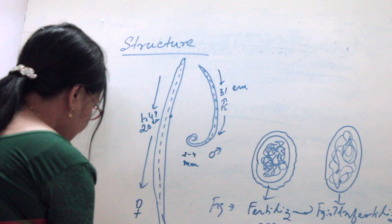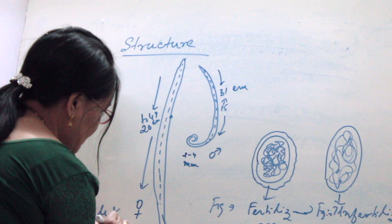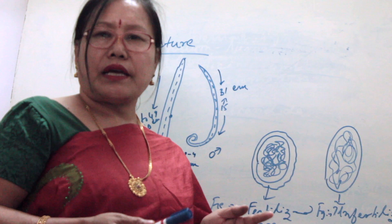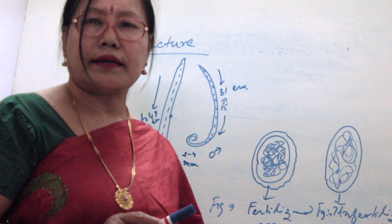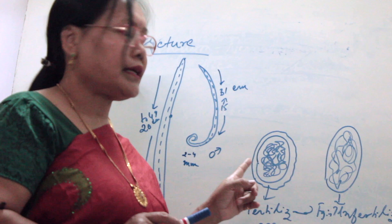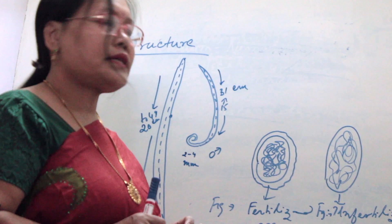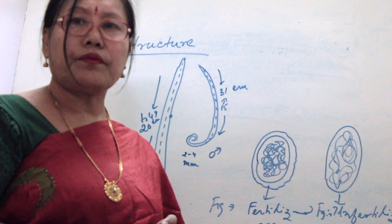This is the figure of the unfertilized egg, and this is the figure of the female and male Ascaris lumbricoides. For this parasite, sexes are separate. The male is shorter than the female. Both fertilized and unfertilized eggs are produced. The main difference is that the fertilized egg is slightly rounded with a thick covering, while the unfertilized egg is slightly elongated with a thinner covering.